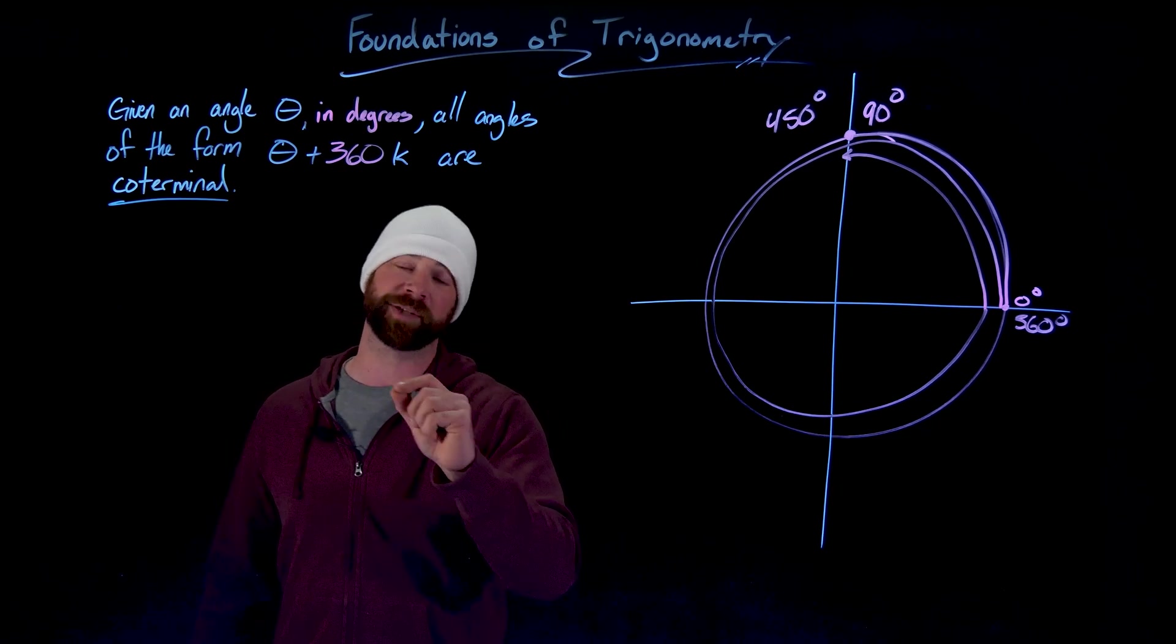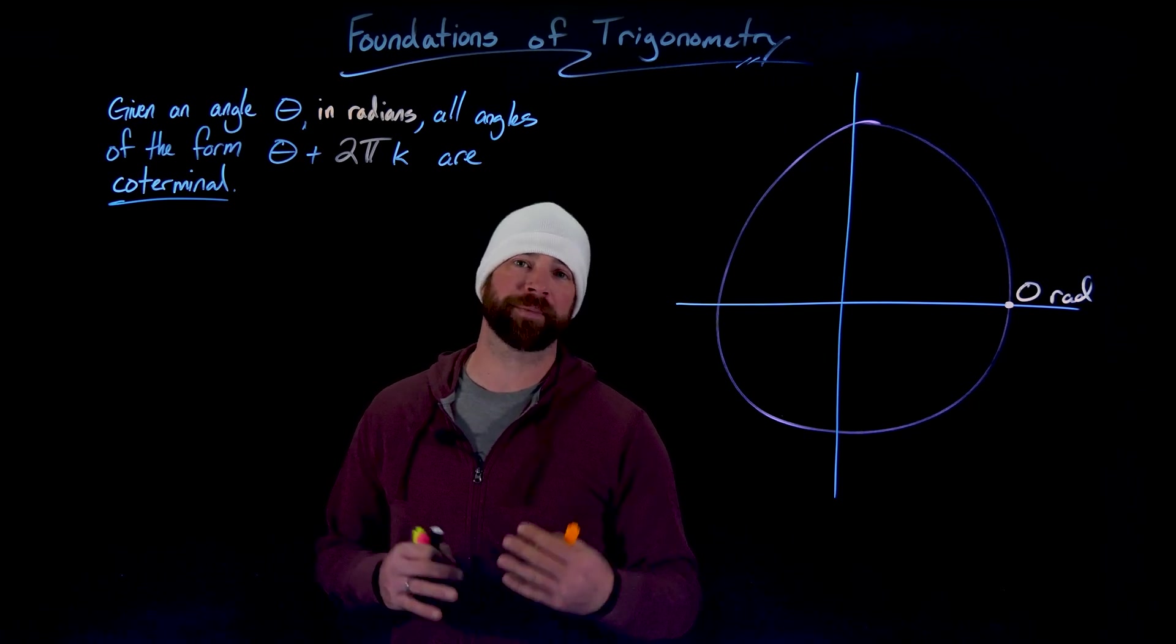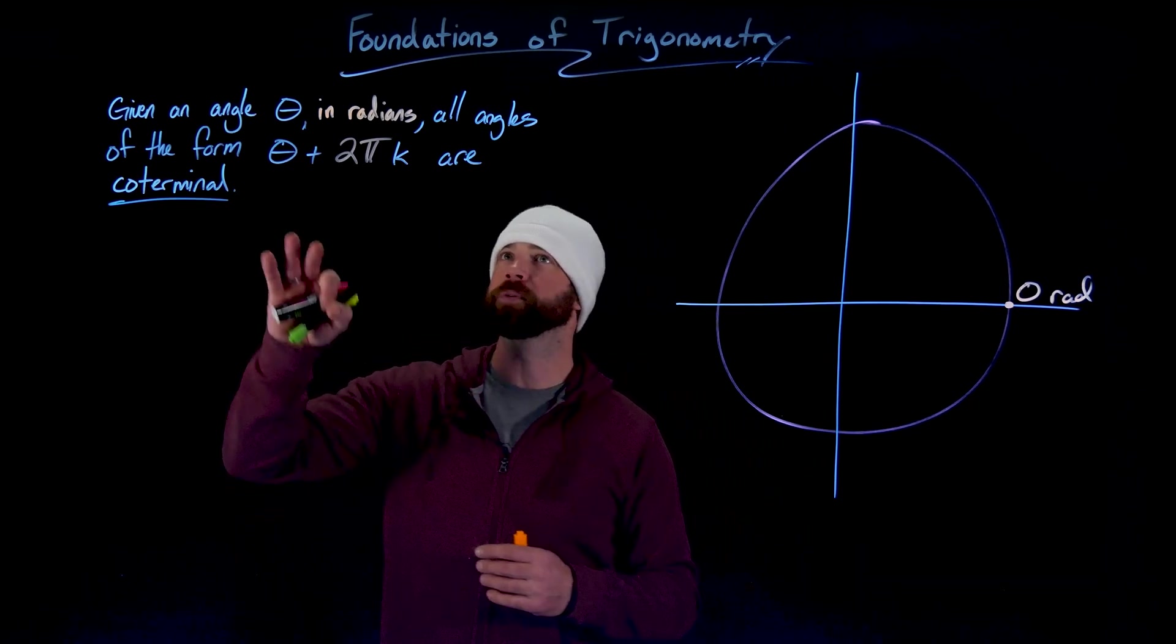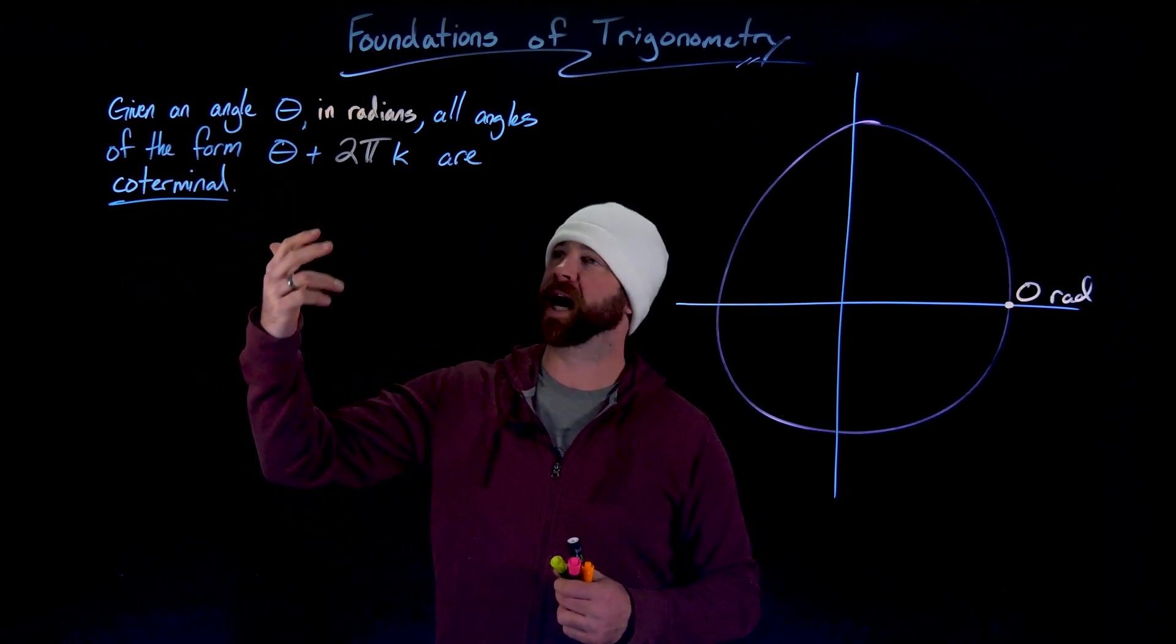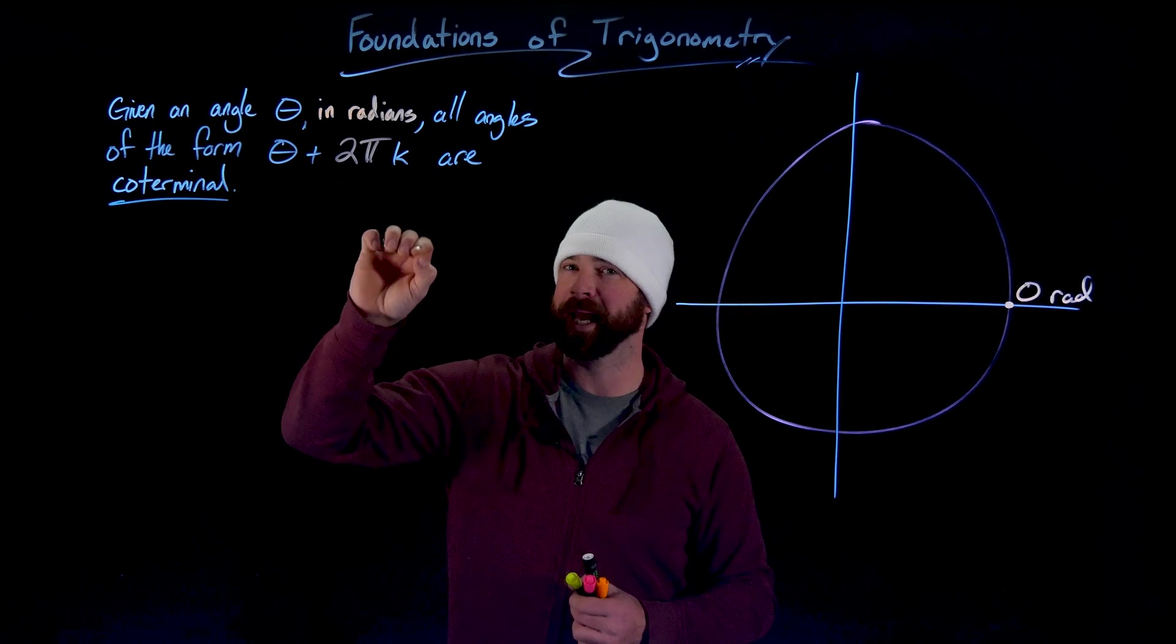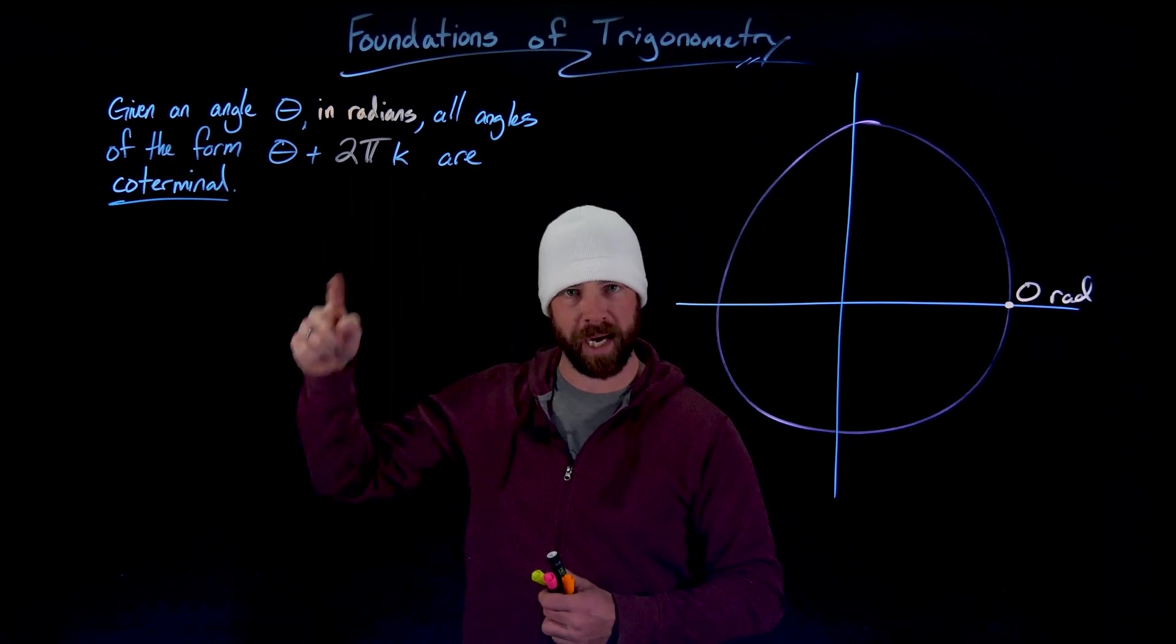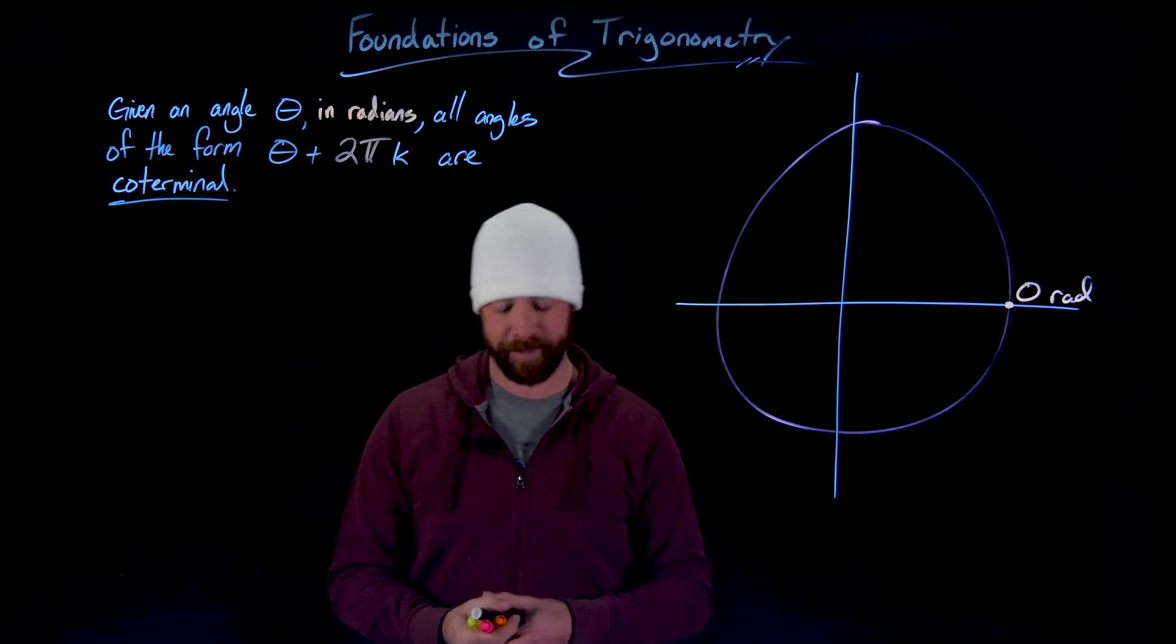Importantly to the use of trigonometry, we care about where you end up as far as your angle goes. Spinning around a bunch of time doesn't matter as much, it matters where you land. And that, in mathematical speak, we call that coterminal. And then the conversation is exactly the same with radians, but just with that conversion of what it means to do a full circle. If we're in radians, then all angles of the form of theta, whatever angle we have, plus 2 pi k, so again, any multiple of 2 pi spins, because 2 pi in radians is all the way around the circle. We are coterminal at that point.